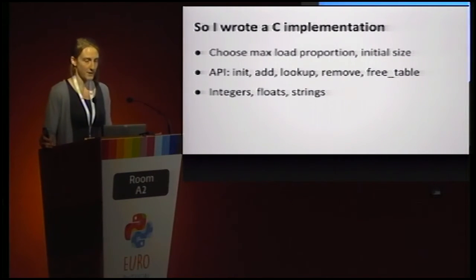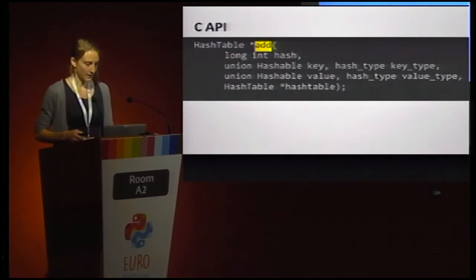So, in order to explore how these affect performance, I wrote my own hash table implementation. And, it enabled the user to choose the maximum load proportion and the initial size of the underlying array. My library provided functions to initialize a table with the given properties, to add, lookup, and remove key value pairs of integer float and string type, and finally, to free the memory malloc to store the data structure, so the array, the linked lists, all your strings, data, whatever.